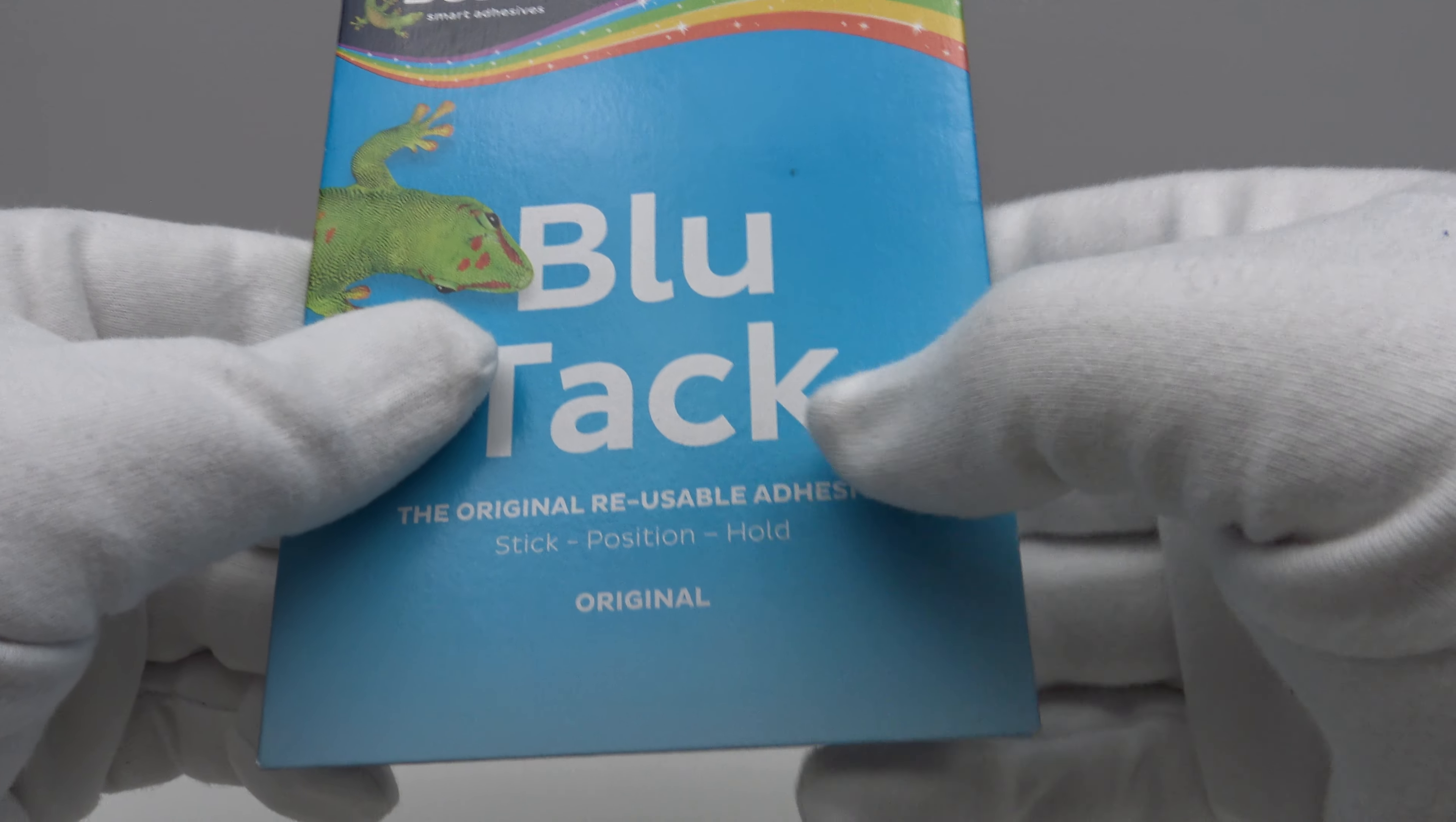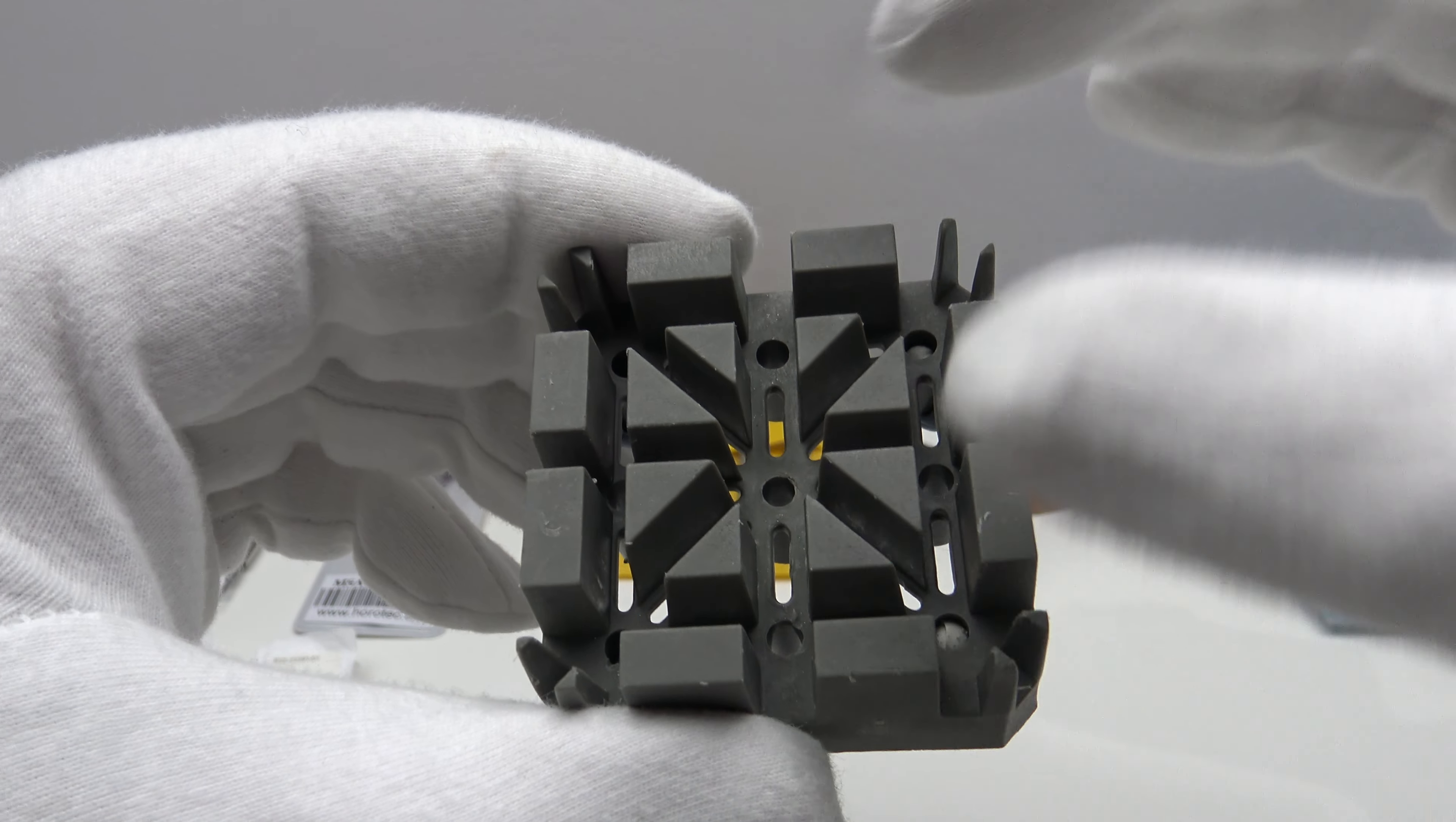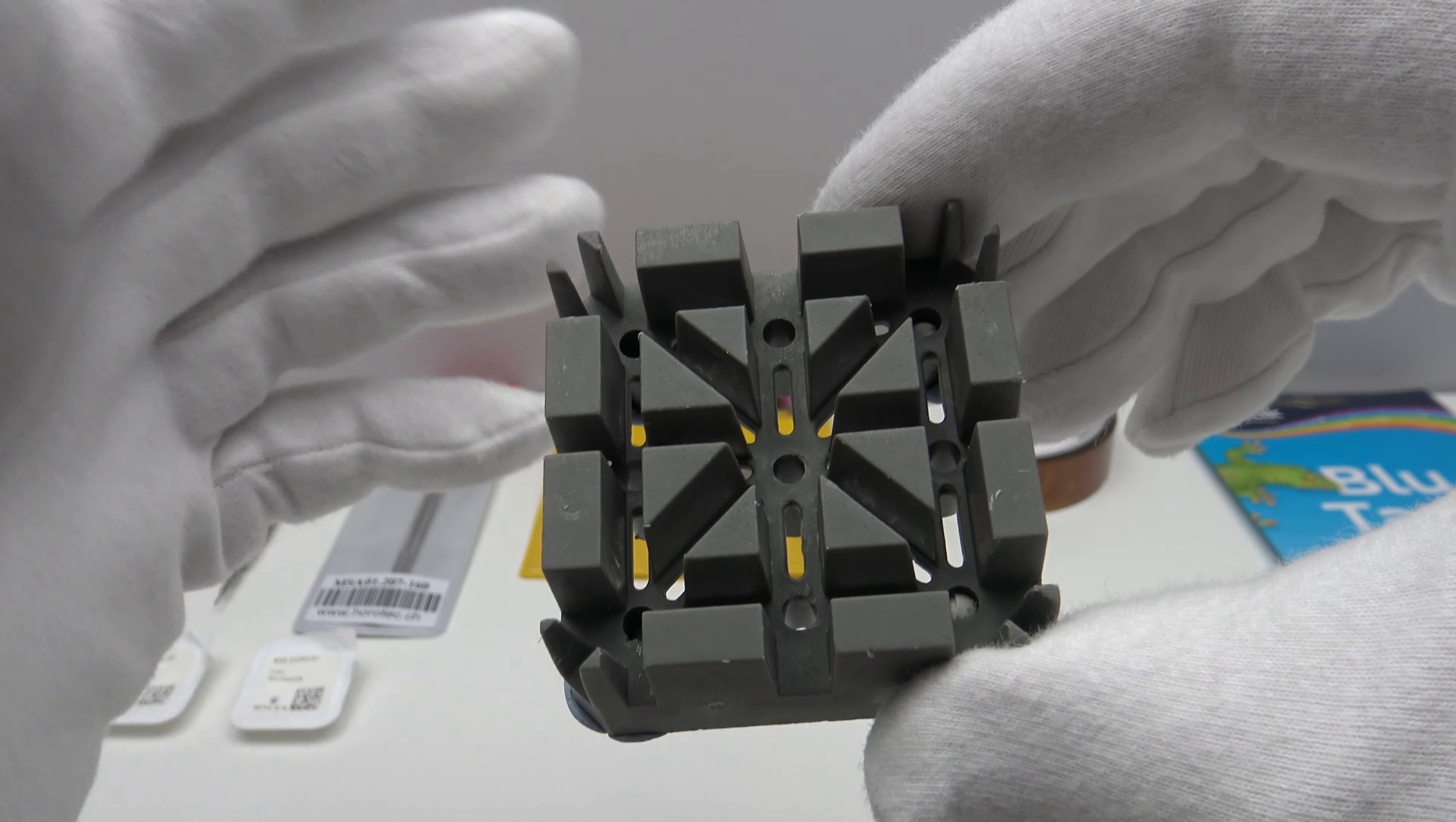The first thing you're going to need is Blu-Tack and I'll show you what I use that for. This nylon bracelet block is very useful for holding bracelets. The purpose of the block is to hold the bracelet sideways and therefore one has two hands free to remove the screws and remove links. It's very useful.